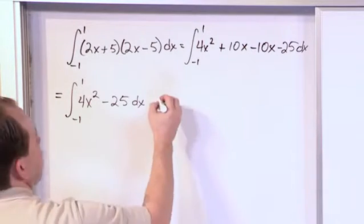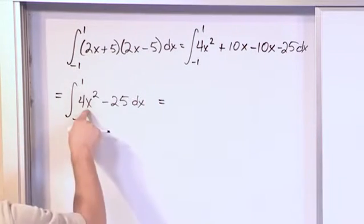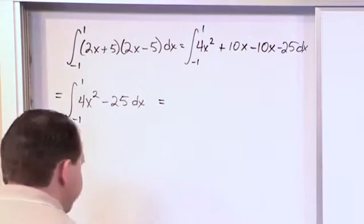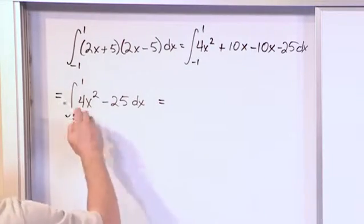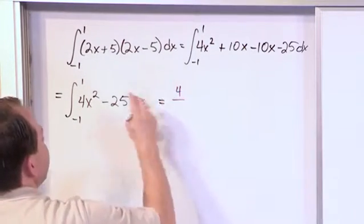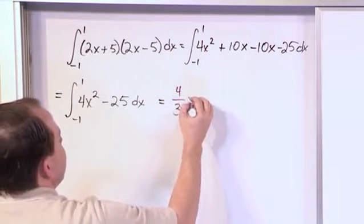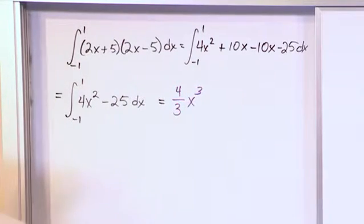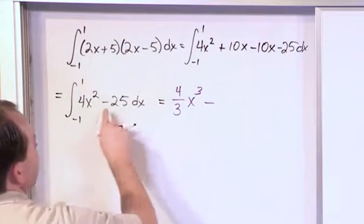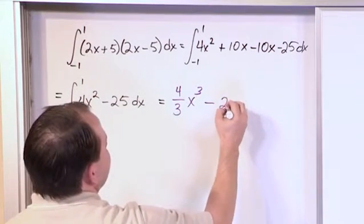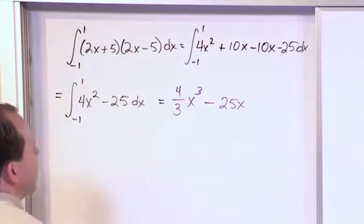All right, so let's go ahead and take this one step at a time. How do we integrate this part? Let me switch colors. It's going to be 4 over the exponent plus 1, and then we have the exponent plus 1 on top of the x. The minus sign comes along for the ride, and then we're going to have 25x, and that is the integral.